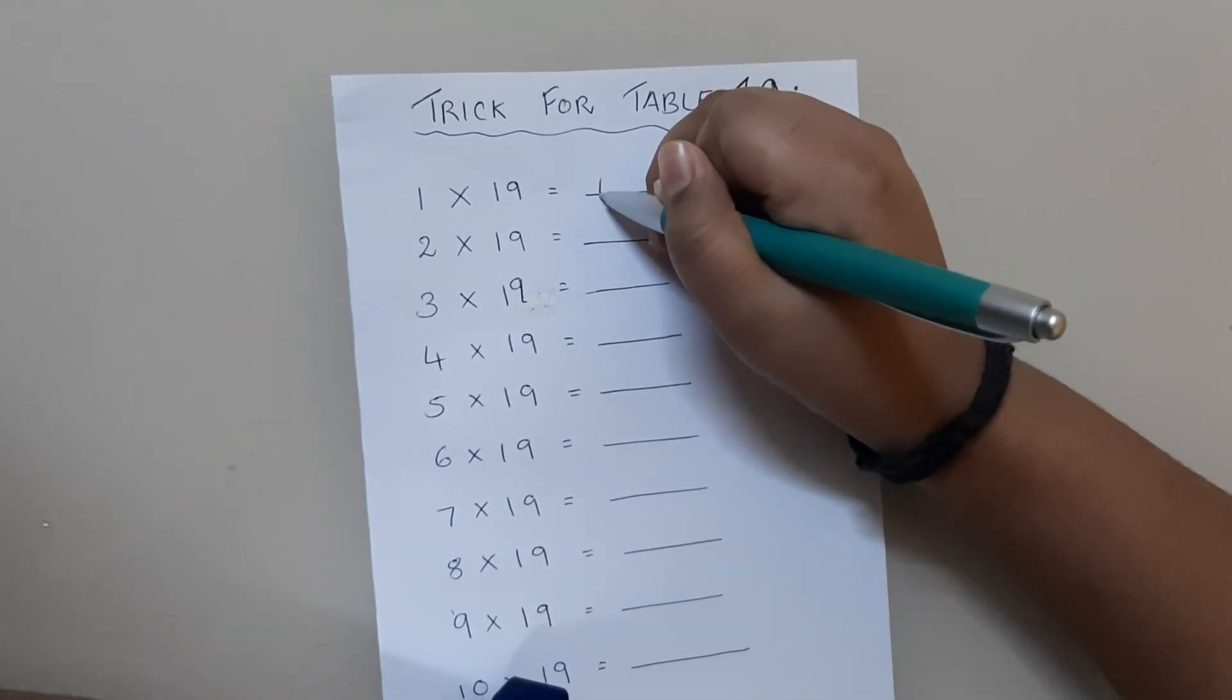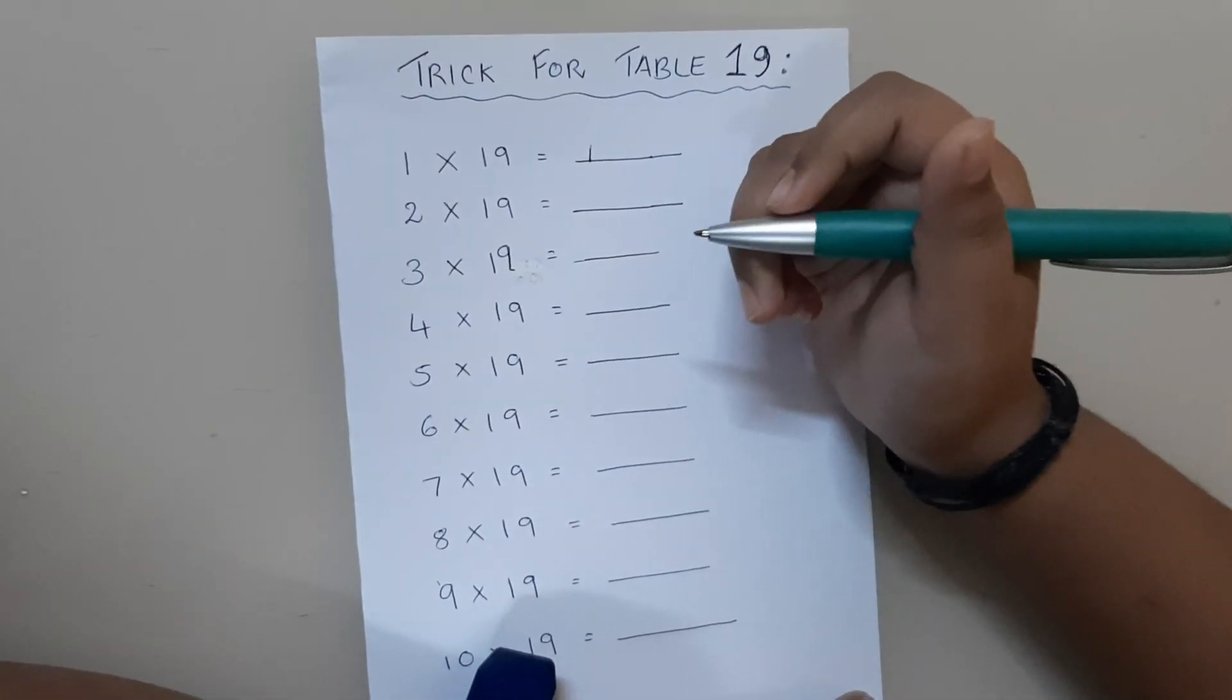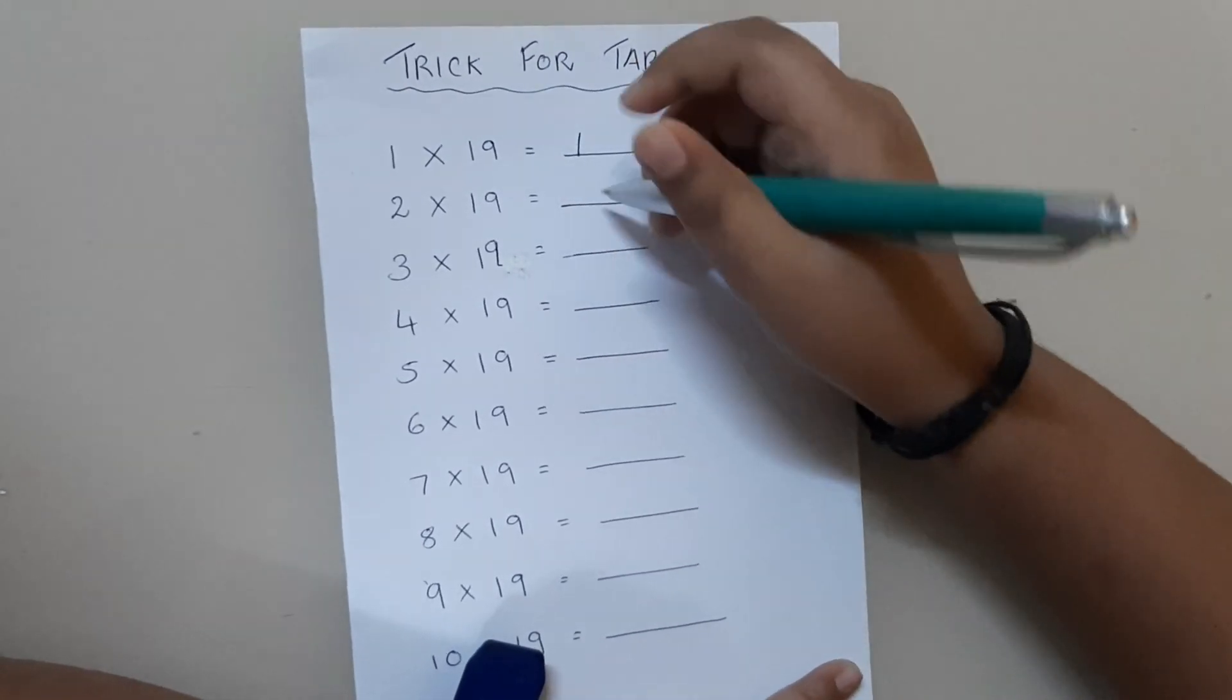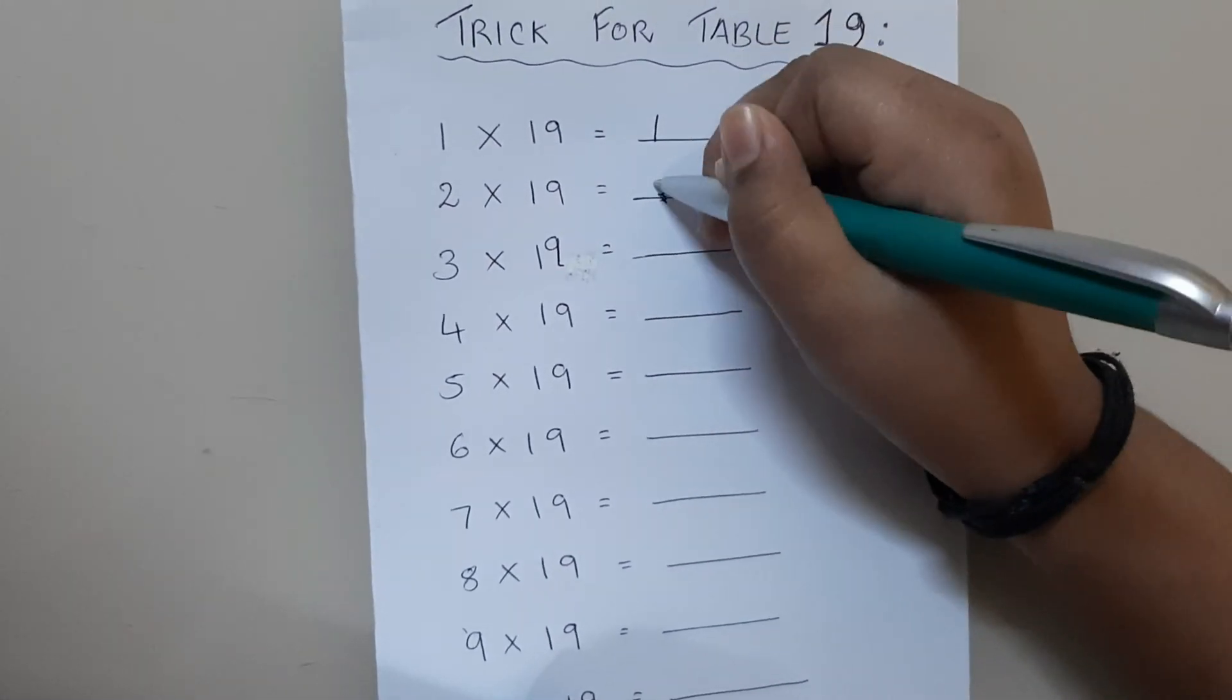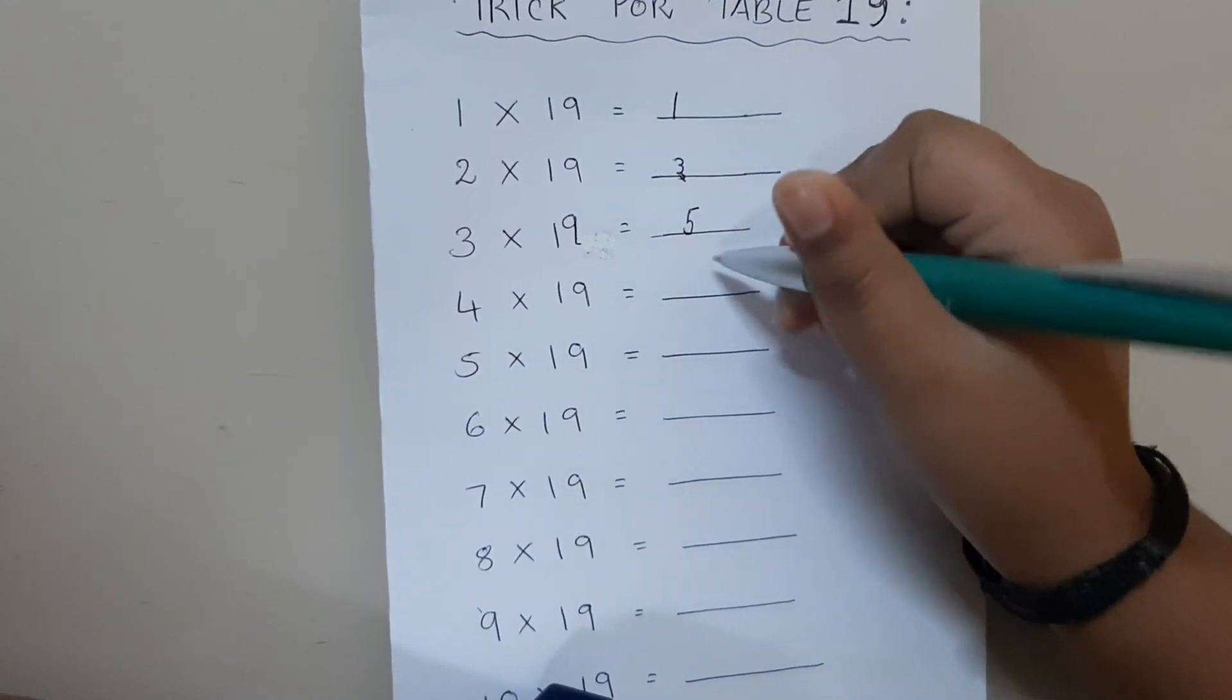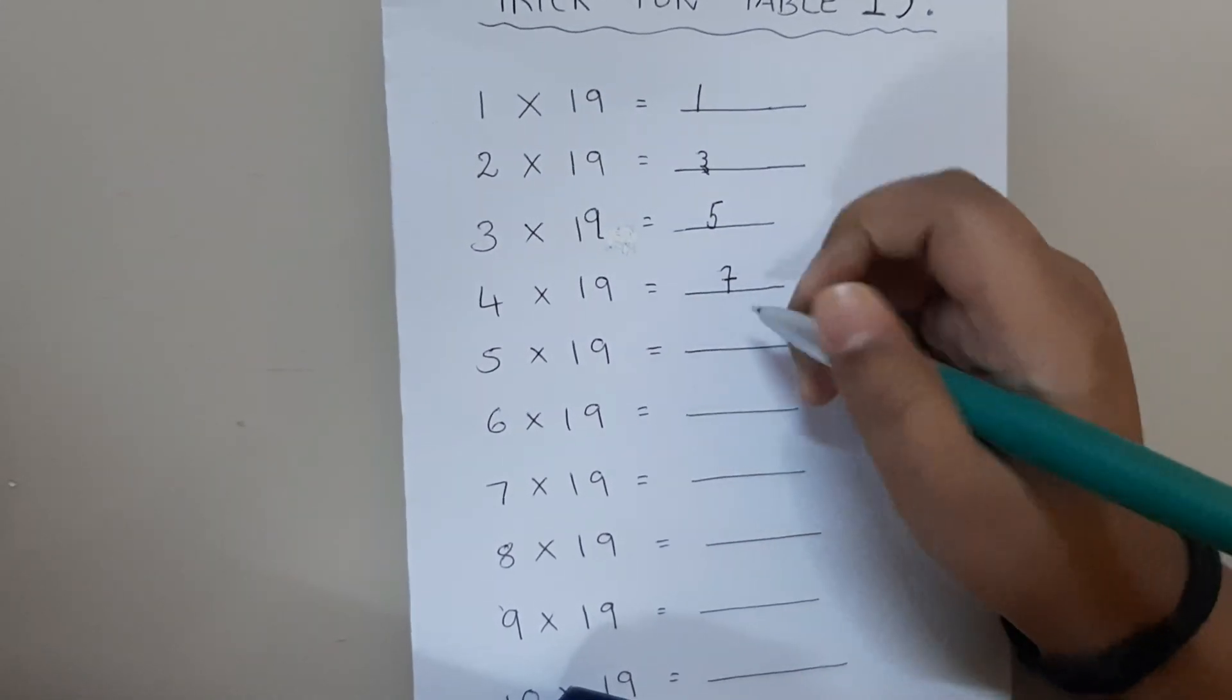First we have to write 1, then we have to skip each number in between. Skip 2 and write 3, skip 4. Skip, skip, skip 4 and write 5, skip 6 and write 7, skip 8 and write 9.